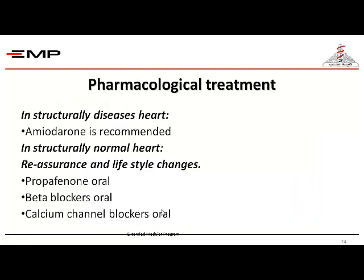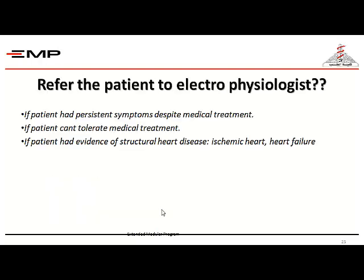Regarding treatment: if the patient has a structurally diseased heart and is symptomatic, they may be given amiodarone. If the patient has a normal heart, the most important step is to reassure the patient and advise lifestyle modification — avoid triggering factors, avoid stress, avoid caffeine, and so on. Medications that can be used include propafenone oral or beta blockers oral.